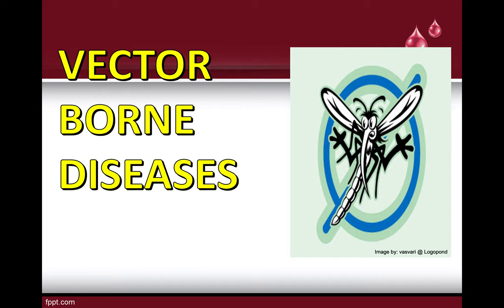A quick recap from our last discussion: a vector is the living organism that carries the pathogenic agent — be it a virus, a parasite, or a bacteria — that actually causes the disease. Last time we talked about different vectors like snails, lice, ticks, triatomine bugs, sandfly, tsetse fly, and mosquito. We also discussed dengue hemorrhagic fever, the different tests needed to detect it, and the symptoms by grade.